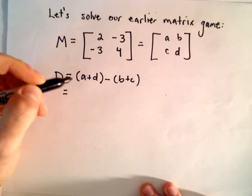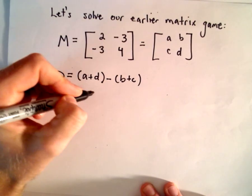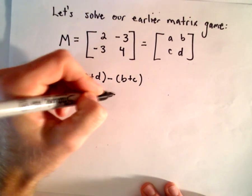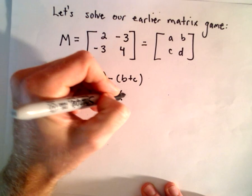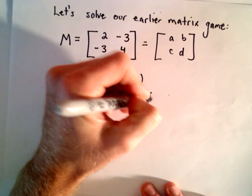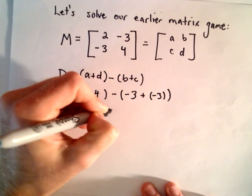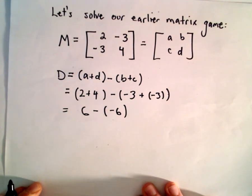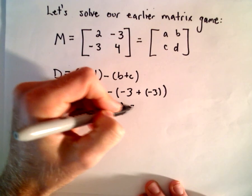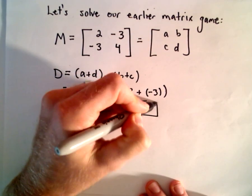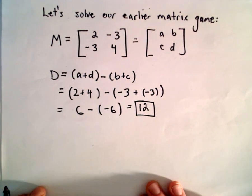If we substitute in our values, A is going to be 2, D will be 4. So you have 2 plus 4 minus B plus C, so negative 3 plus negative 3. That's going to be 6 minus negative 6 when we simplify. And 6 minus negative 6 is going to give us positive 12. So that's going to be our value for capital D.